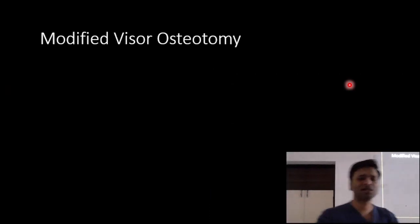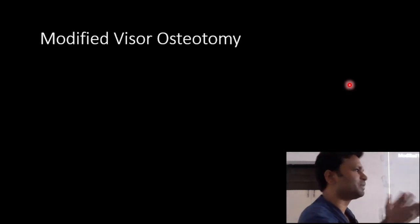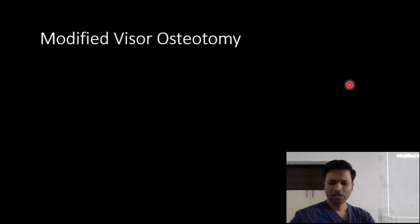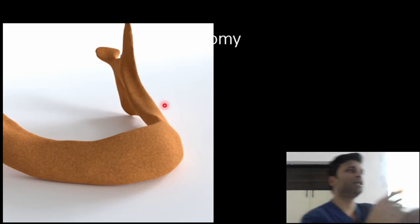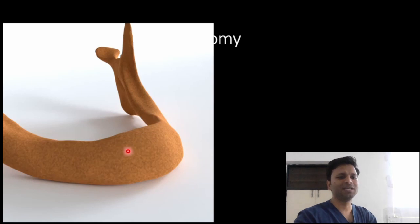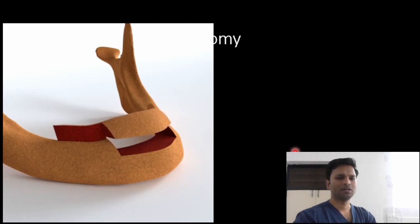Then we have something called as modified visor osteotomy. There has to be something related to visor osteotomy with a modification cut here, right? So again, the same thing, we give an incision, we expose the bone. We give a vertical cut, but vertical cut will be only in the body regions. And then we give a horizontal cut in the symphysis and parasymphysis region. Let me show you.